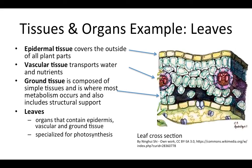For example, leaves are a plant organ, but leaves are composed of three different tissue types. First, on the outside of the leaf, there is epidermal tissue, and this covers, at least initially, all parts of a plant. So that is this layer up here, as well as this layer on the bottom.